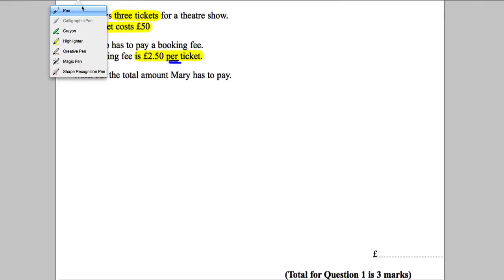Work out the total amount of money Mary has to pay. That's how I would have highlighted that question. Make sure you're highlighting the question in the exam. There are two parts to Mary's cost: the ticket cost and the booking fee cost.